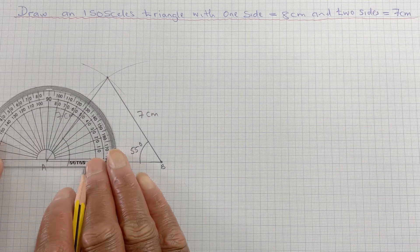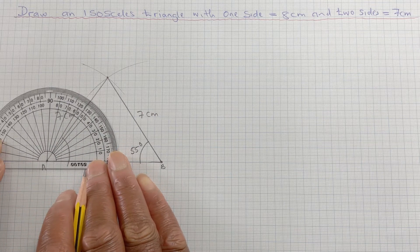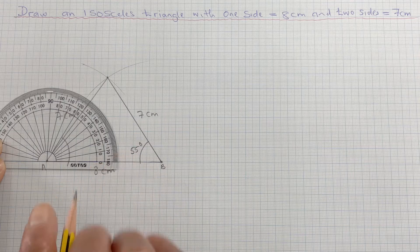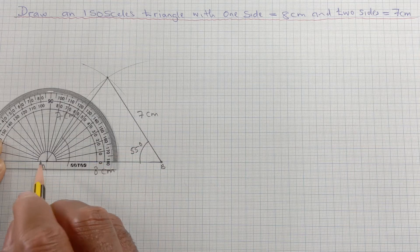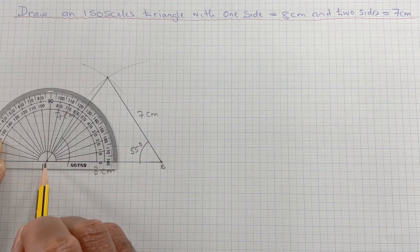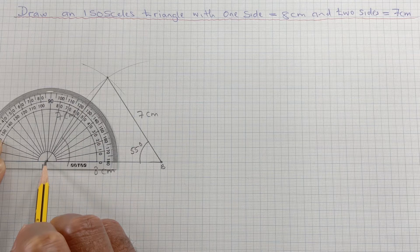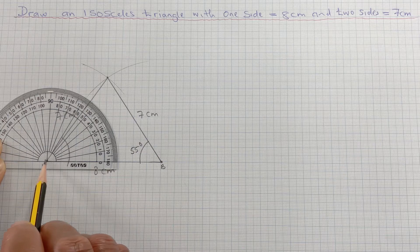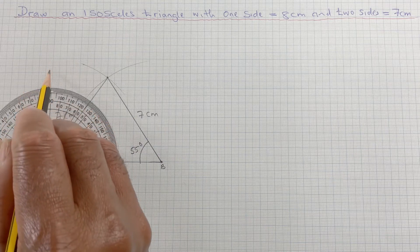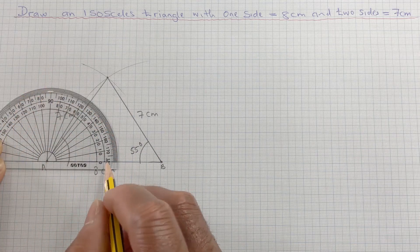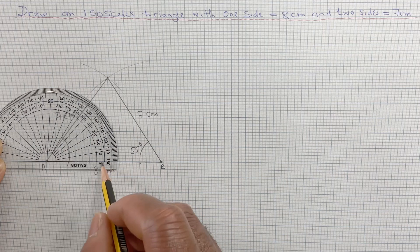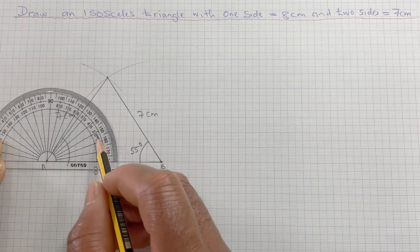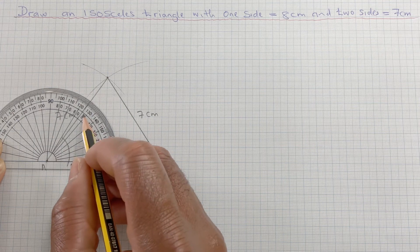And we do the same thing here. Put the protractor, we put the protractor centre here. And the line 0 lies on this line, and the 90 degrees lies on that line. We can count the angle from 0, 10, 20, 30, 40, 50, 55.